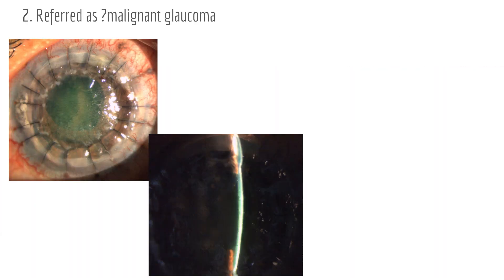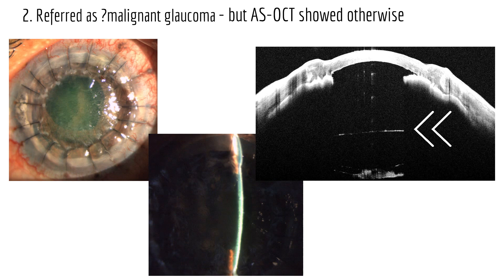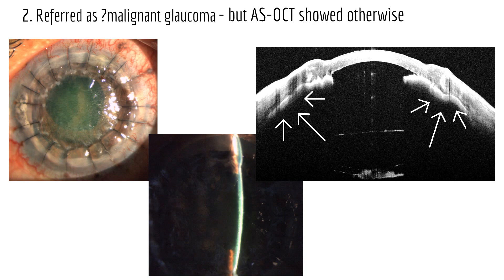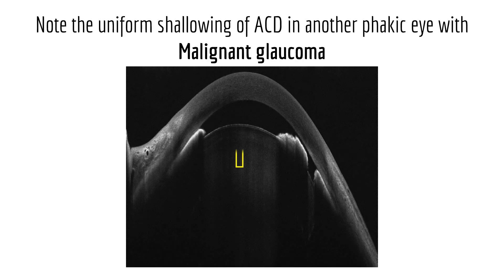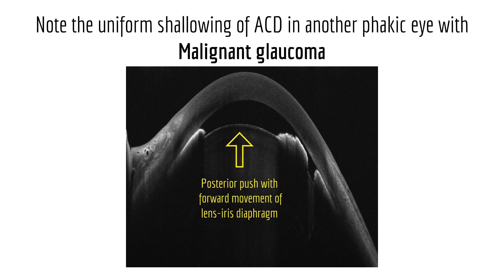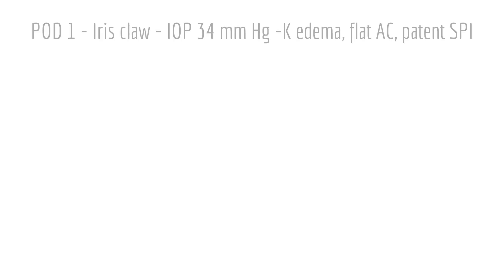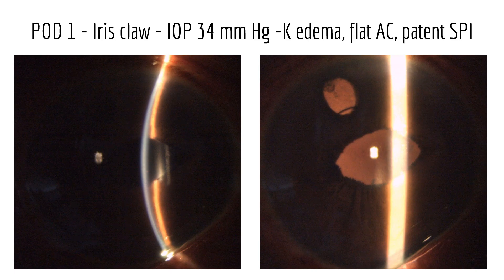This patient was referred one week post-PKP with high IOP and a flat anterior chamber, to rule out malignant glaucoma. Note the position of the IOL reflex and a deep posterior chamber. The glaucoma here is due to extensive synechial angle closure as evidenced by ASOCT. In malignant glaucoma, one can expect forward movement of the entire lens-iris diaphragm with a uniformly shallow AC. This patient developed shallow AC on POD1 after iris claw IOL with a patent surgical PI — a classic presentation of malignant glaucoma.